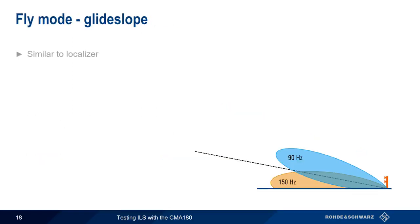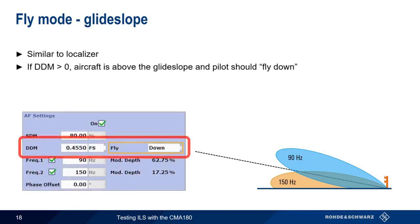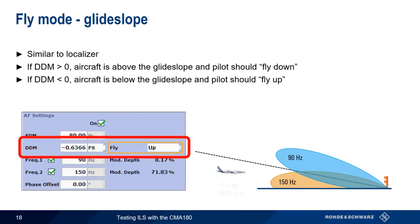The fly mode in glide slope works much the same way as it does for localizer. If the difference in depth of modulation is positive, this means the aircraft is above the glide slope and the pilot should fly down. Conversely, if DDM is negative, this means the aircraft is below the glide slope and the pilot should fly up.